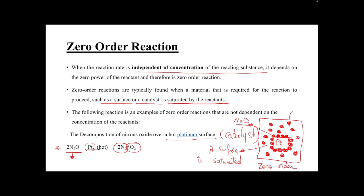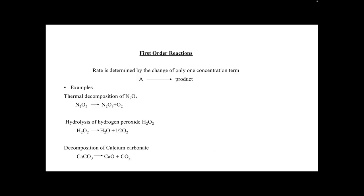Zero-order reactions involve a reactant that does not affect the rate of the chemical reaction. This happens when the reaction involves a surface or a catalyst. When the surface or catalyst is saturated by the reactants, the reaction is converted to a zero order.